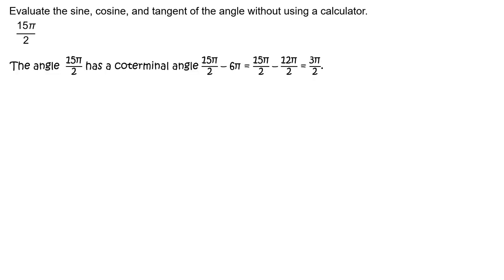First, note the angle 15 pi halves has a coterminal angle. 15 pi halves minus 6 pi equals 15 pi halves minus 12 pi halves, or 3 pi halves. So sine of 15 pi halves equals sine of 3 pi halves, which equals negative 1.